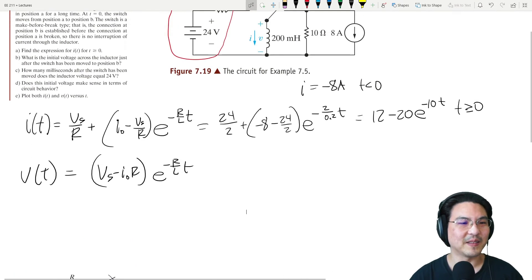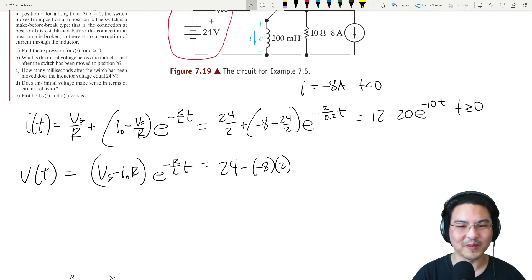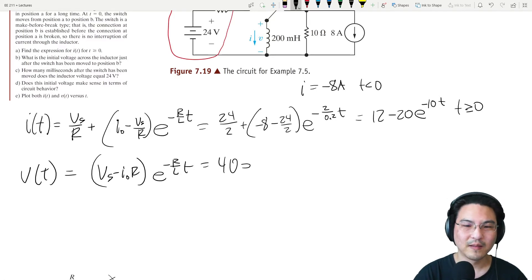And then if we just plug in the numbers: Vs was 24 minus I₀ R. Let's just simplify this already, so that would be 24 minus negative 16 is 40 e to the minus 10t. There we go, so there's the voltage.